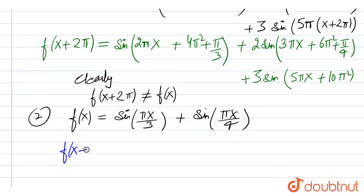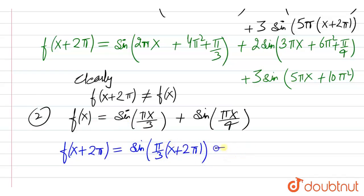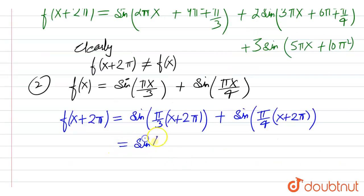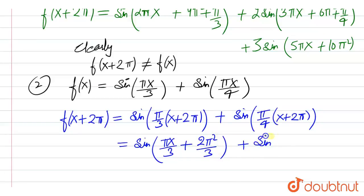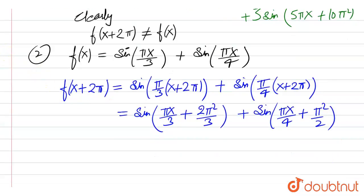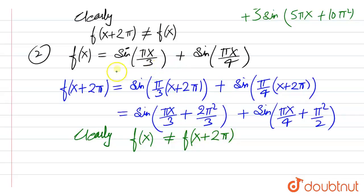We find f(x + 2π) and check if it equals f(x). This gives sin(π(x + 2π)/3) plus sin(π(x + 2π)/4), which becomes sin(πx/3 + 2π²/3) plus sin(πx/4 + π²/2). Clearly, f(x) is not equal to f(x + 2π), so this function does not have period 2π.